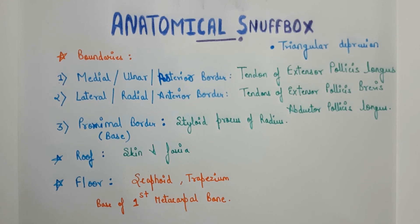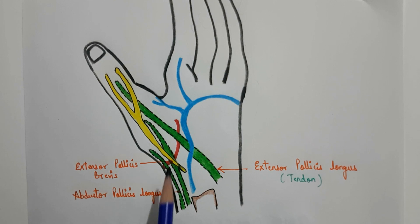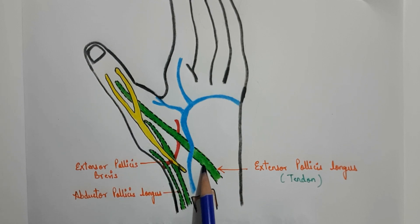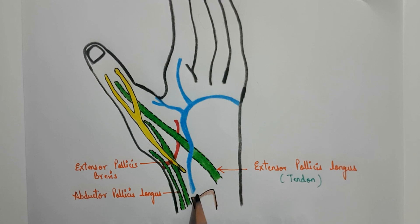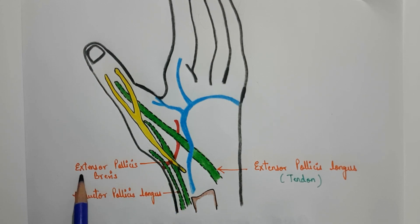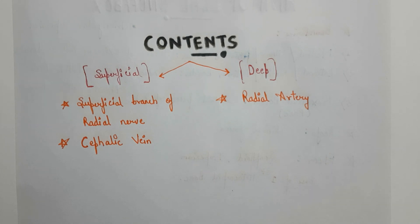Before starting with the contents, let us revise the boundaries once more. This triangular depression is the anatomical snuff box. The medial, ulnar, or posterior border is formed by the tendon of extensor pollicis longus. The proximal border or base is formed by the styloid process of the radius bone. The lateral, radial, or anterior border is formed by two tendons: the extensor pollicis brevis and the abductor pollicis longus.